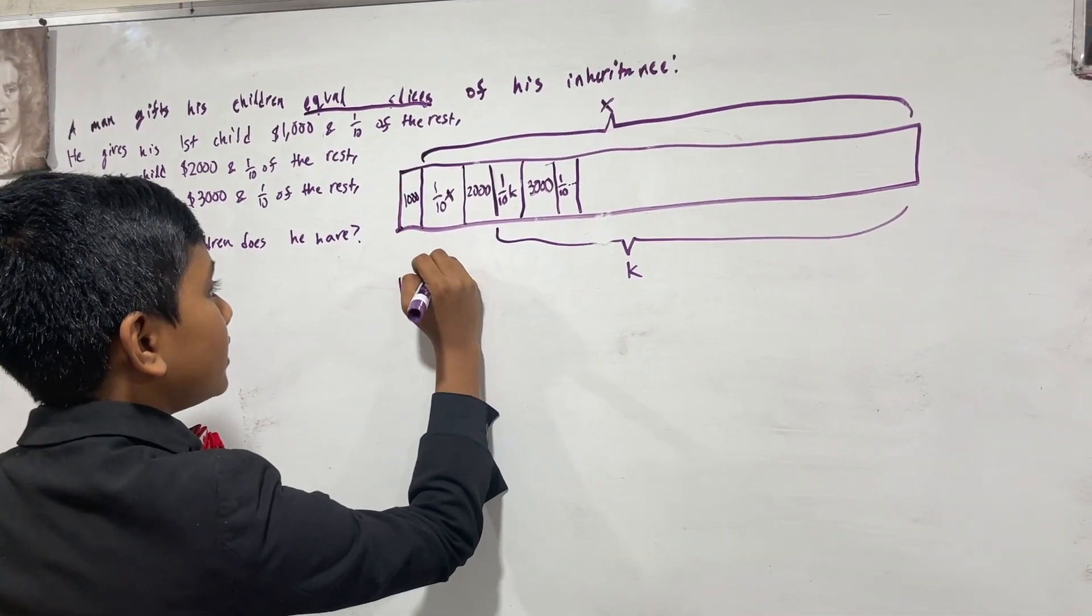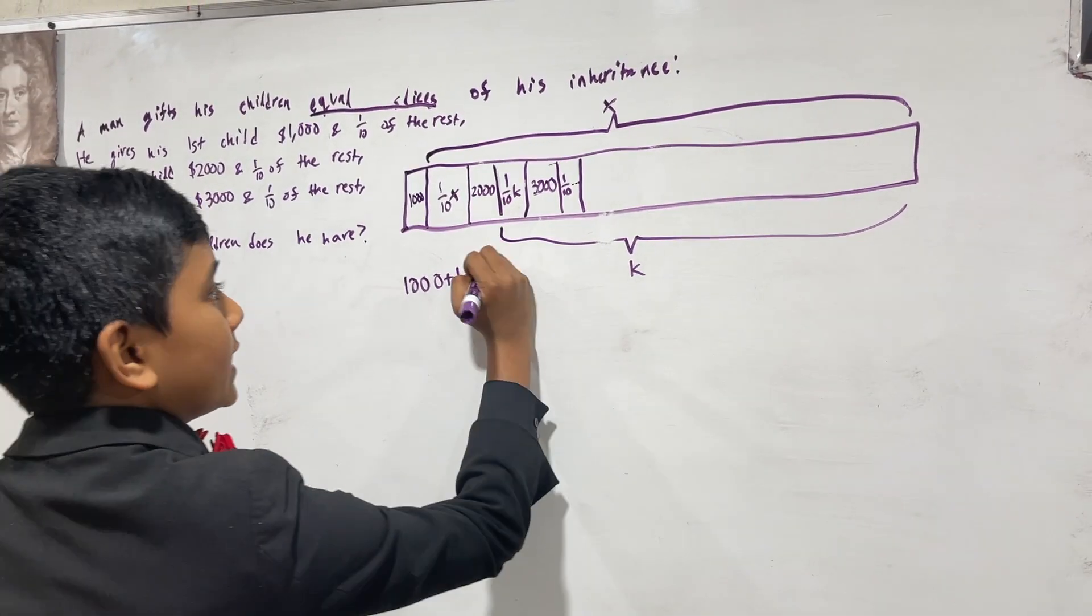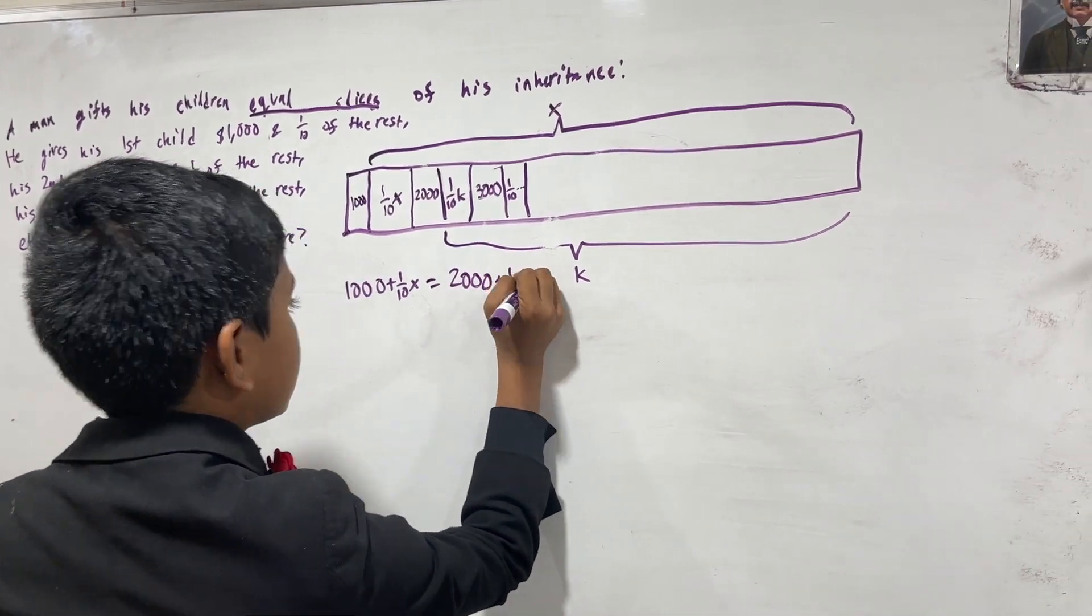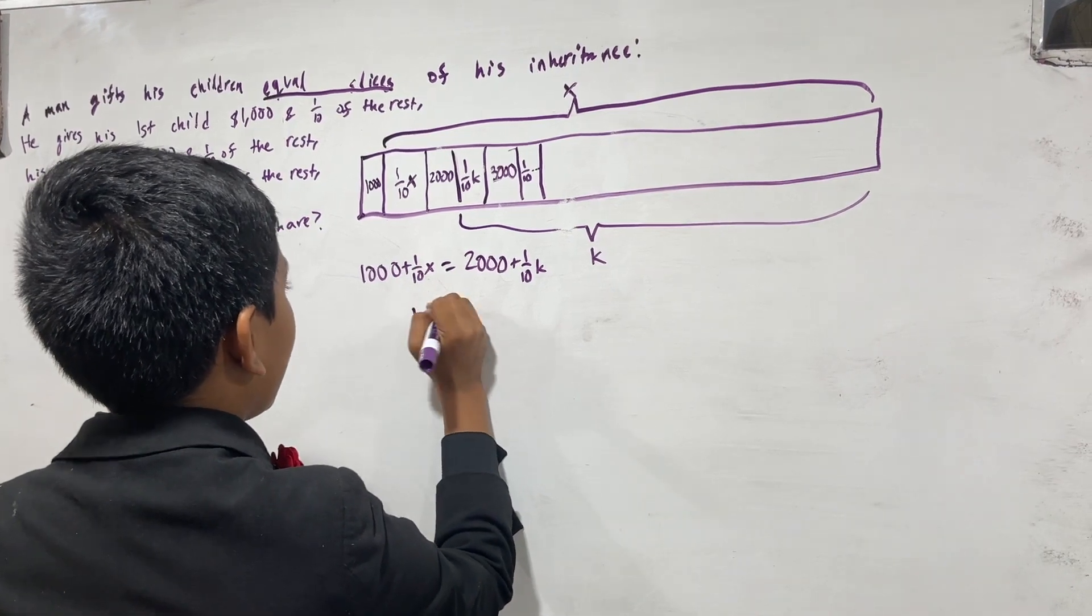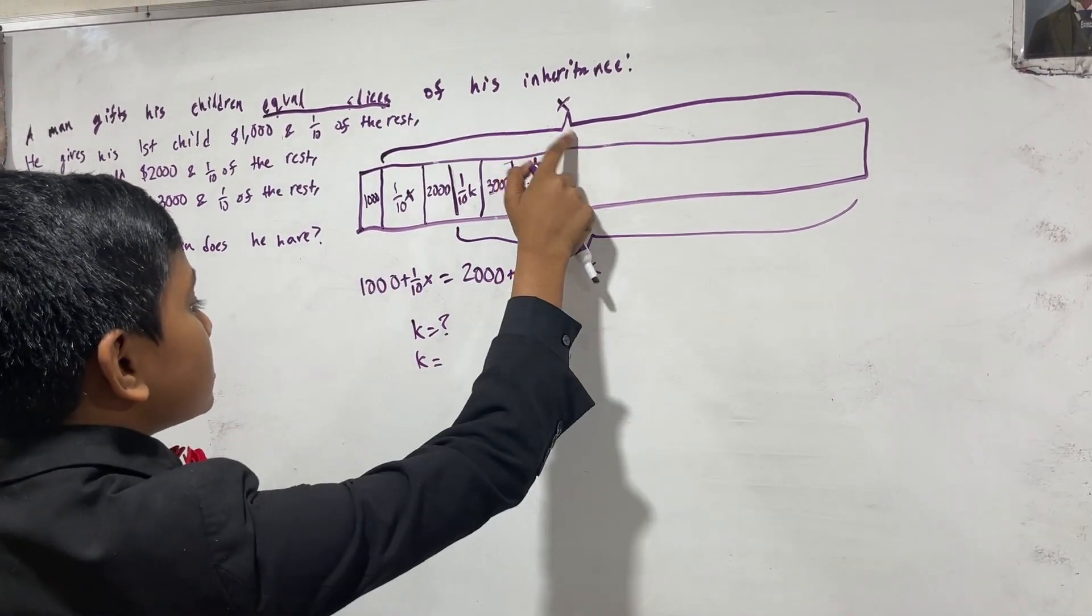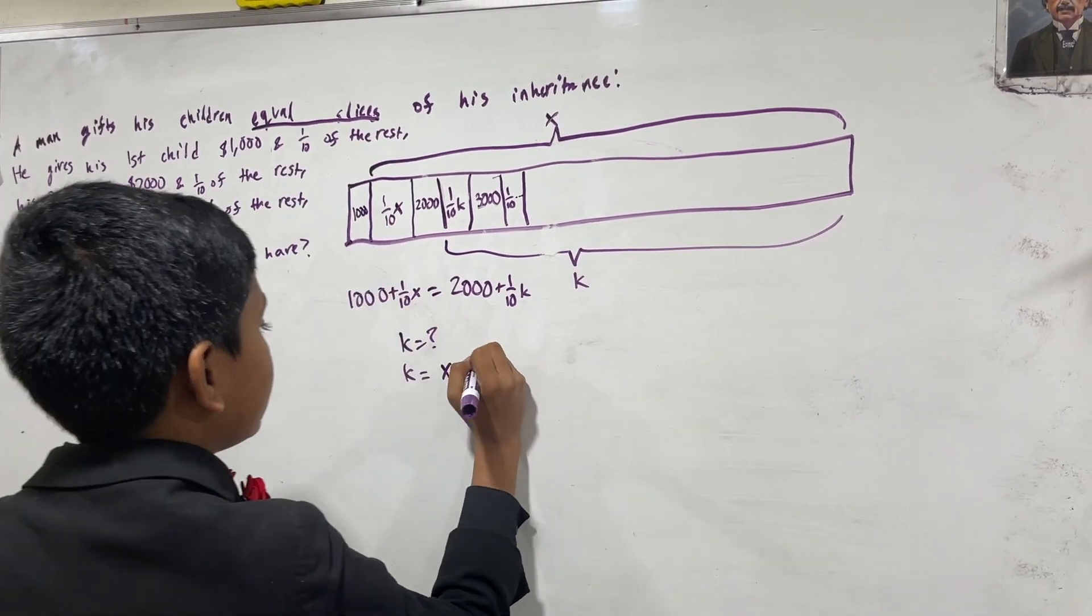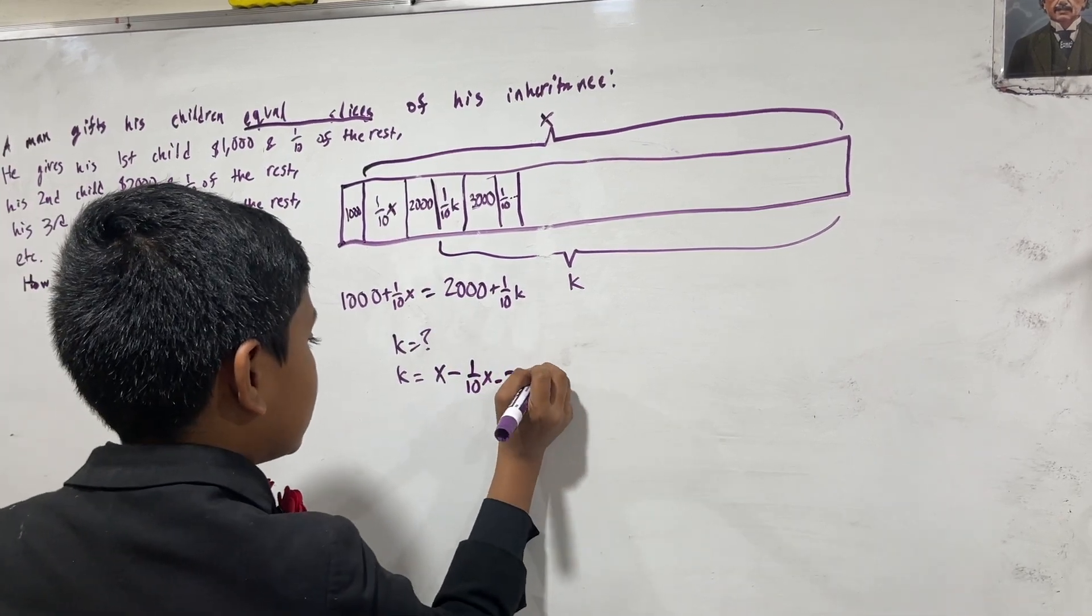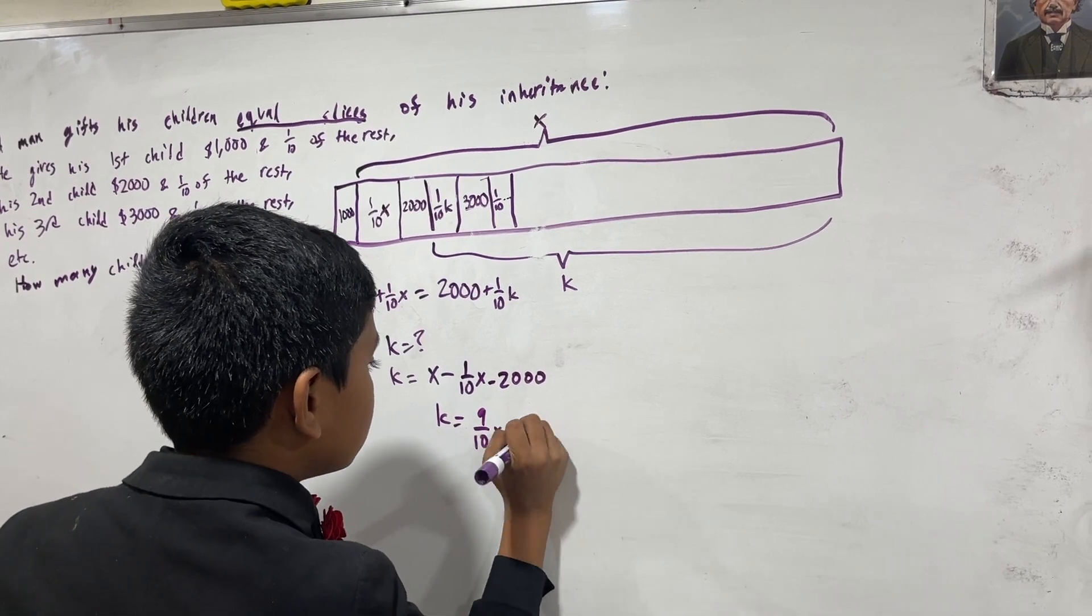That means one thousand plus one tenth X, which is what the first child gets, is equal to two thousand plus one tenth K, which is what the second child gets. So, what is K? Well, K is equal to X minus one tenth of X, which is this section, minus two thousand, which is this section. So, K is nine tenths X minus two thousand.